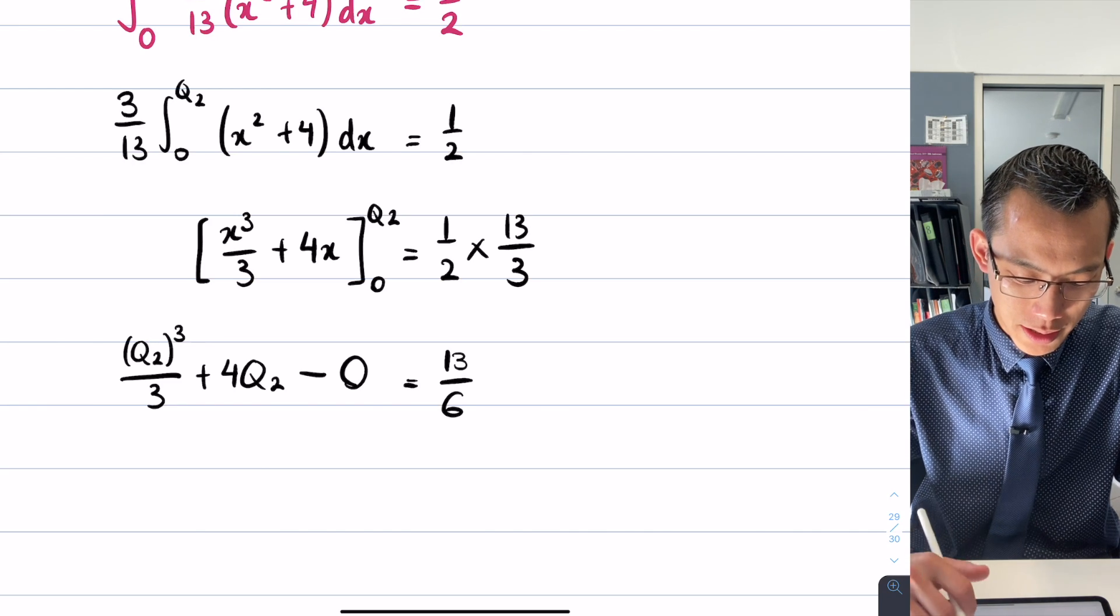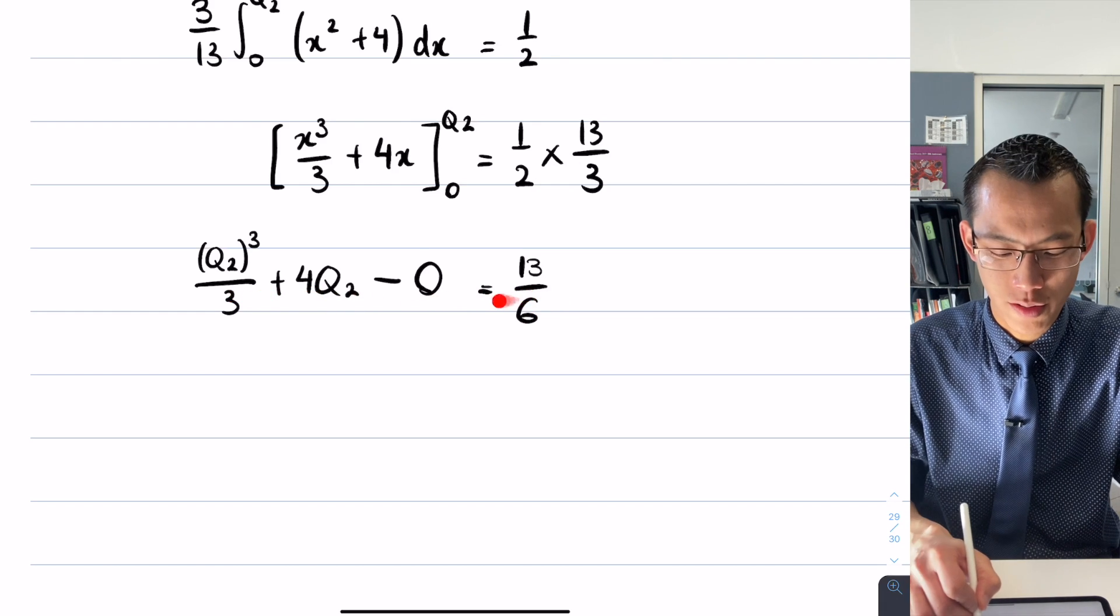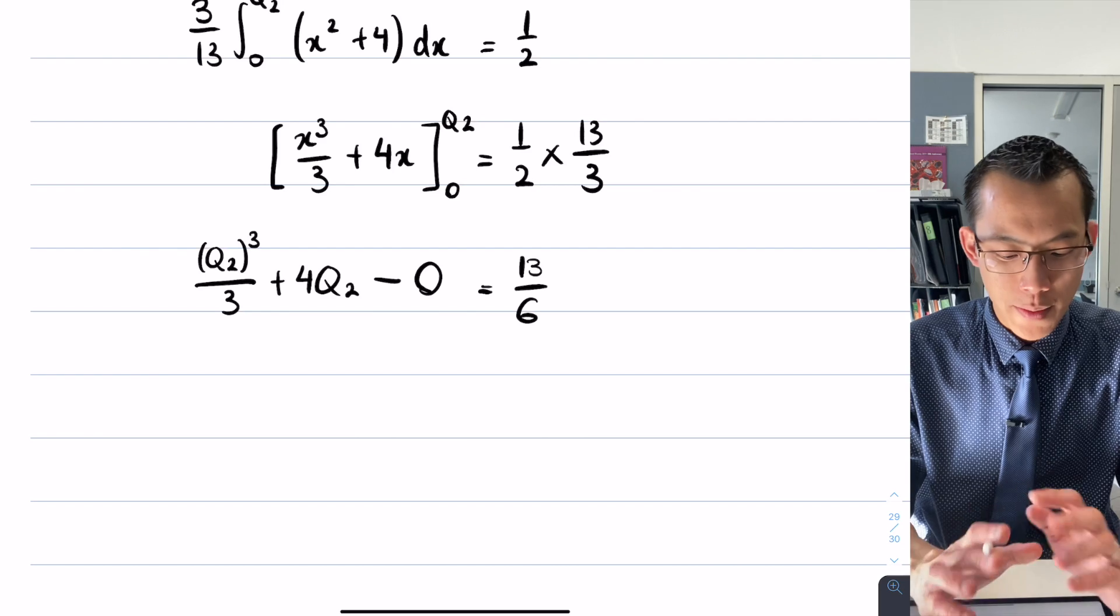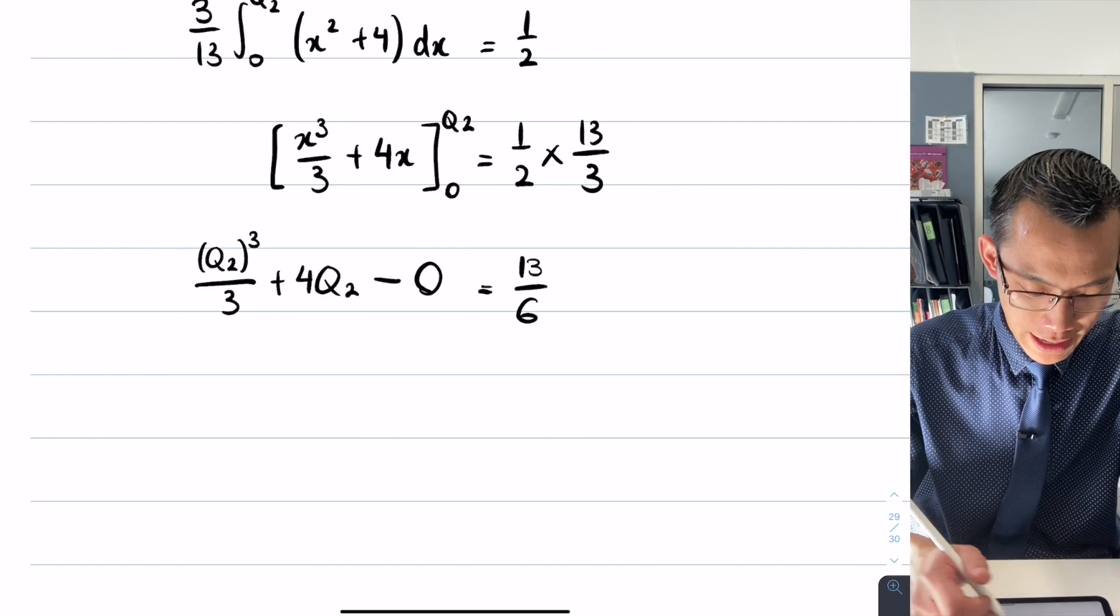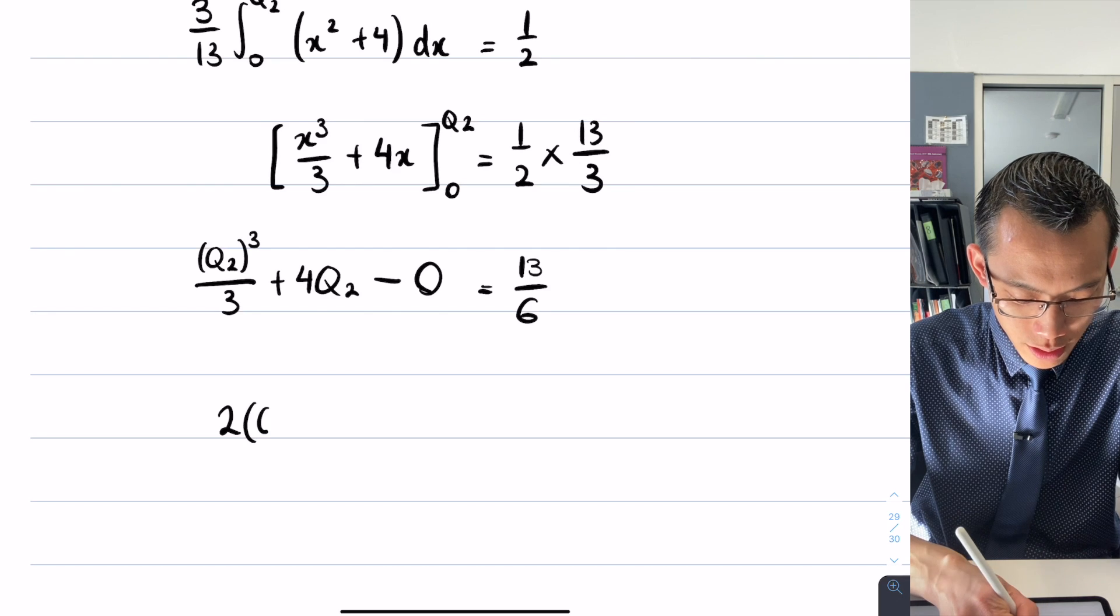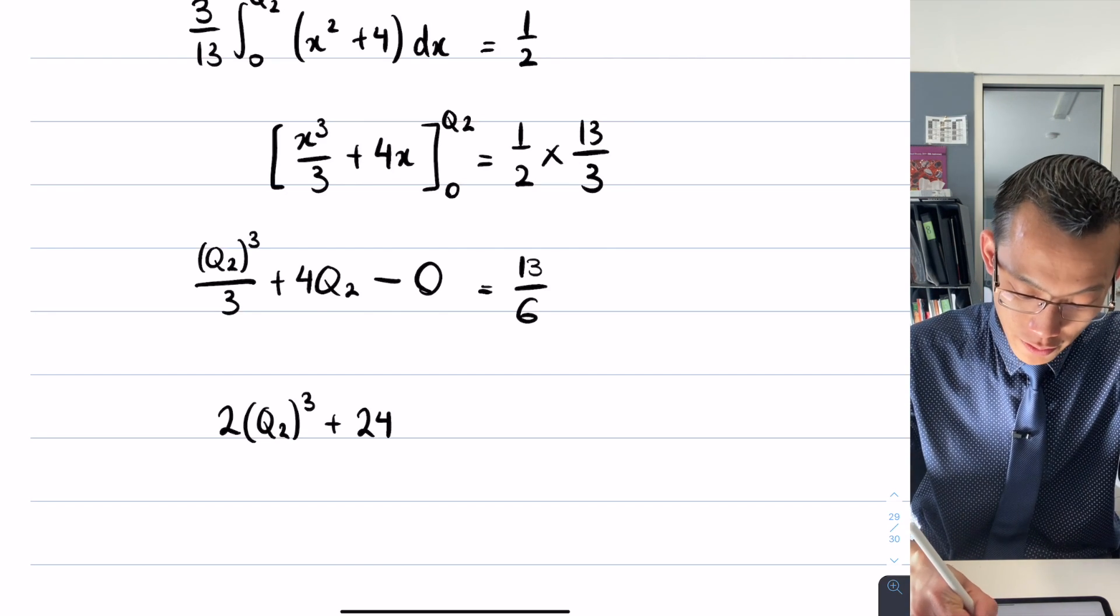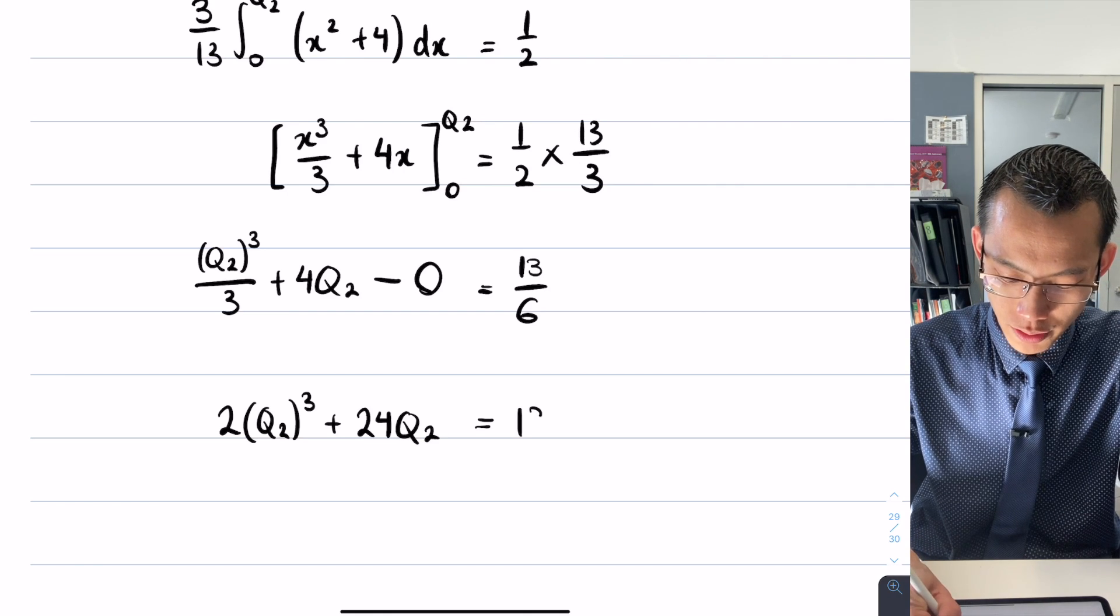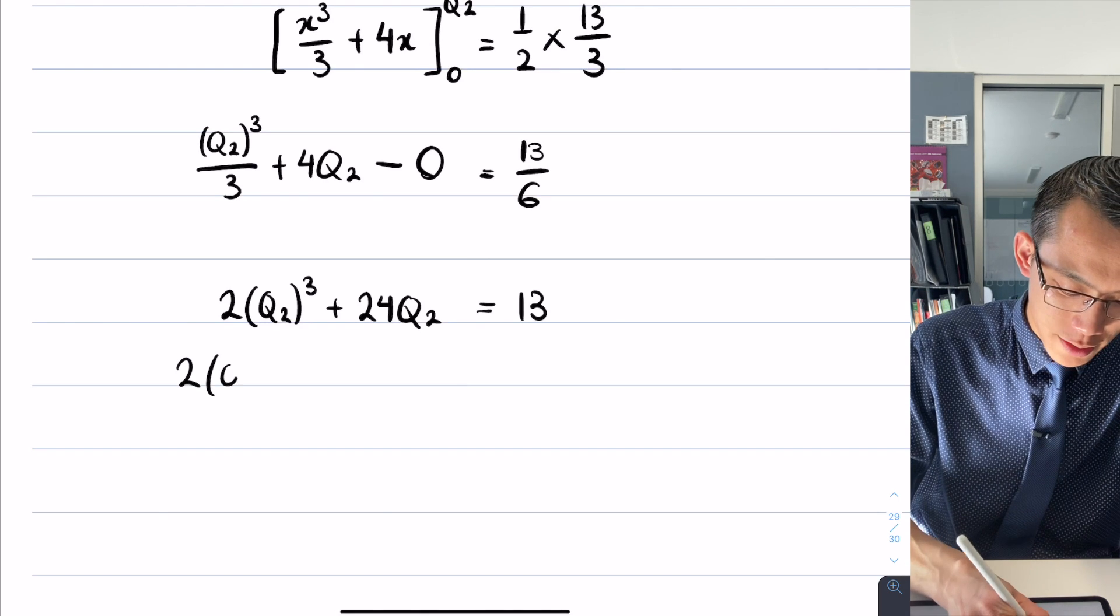We'll tidy up the right hand side, it's 13/6. When I look at this whole line there's fractions which I instinctively want to get rid of. If I multiply through by 6, that should get rid of all my fractions. So I'm going to end up with 2(Q2)³ + 24Q2 = 13.